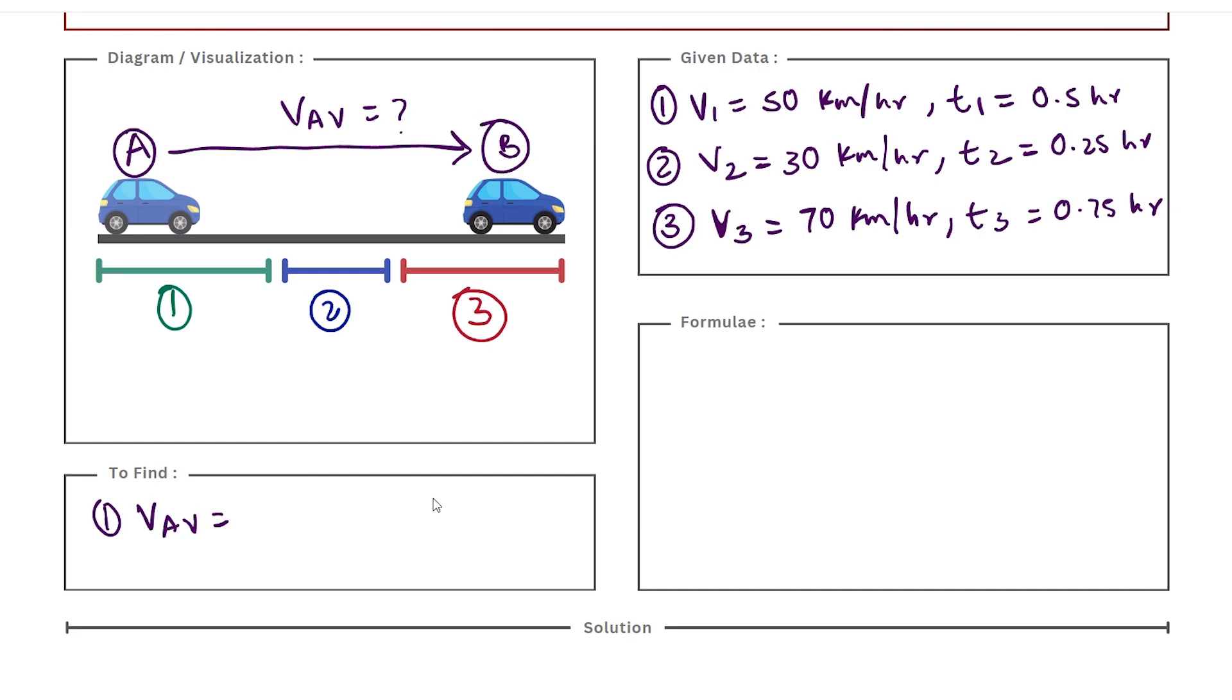Because in physics we have an exact formula for average speed. So v average is given as total path length, so this is the total distance between location A and location B, divided by the total time required.